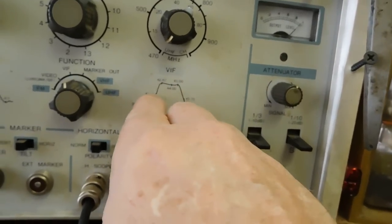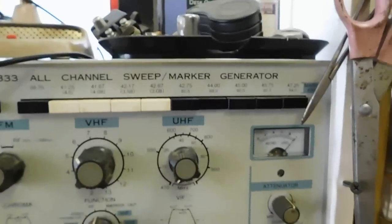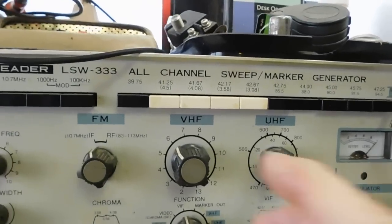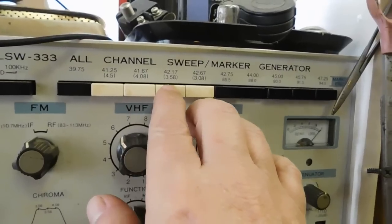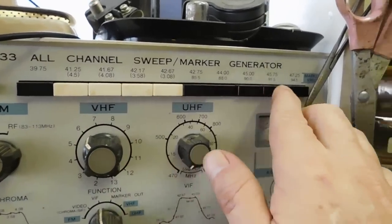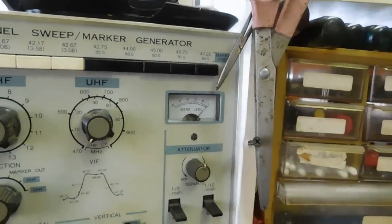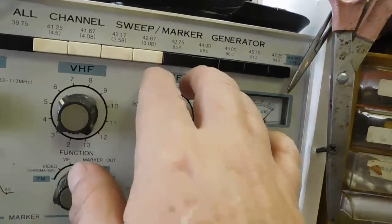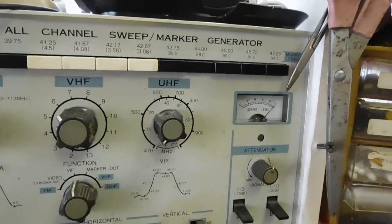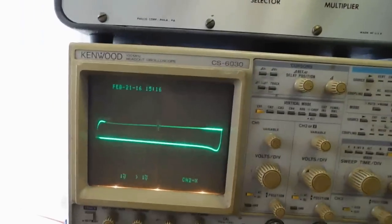So is the 45.75. You can flip that horizontally so then it'd be easier to see. It has preset markers: 39.75, 41.25, 41.67, and so on up to 47.25. These are crystal markers. They also will double out depending on what mode you're in. I'm in the video IF right now.